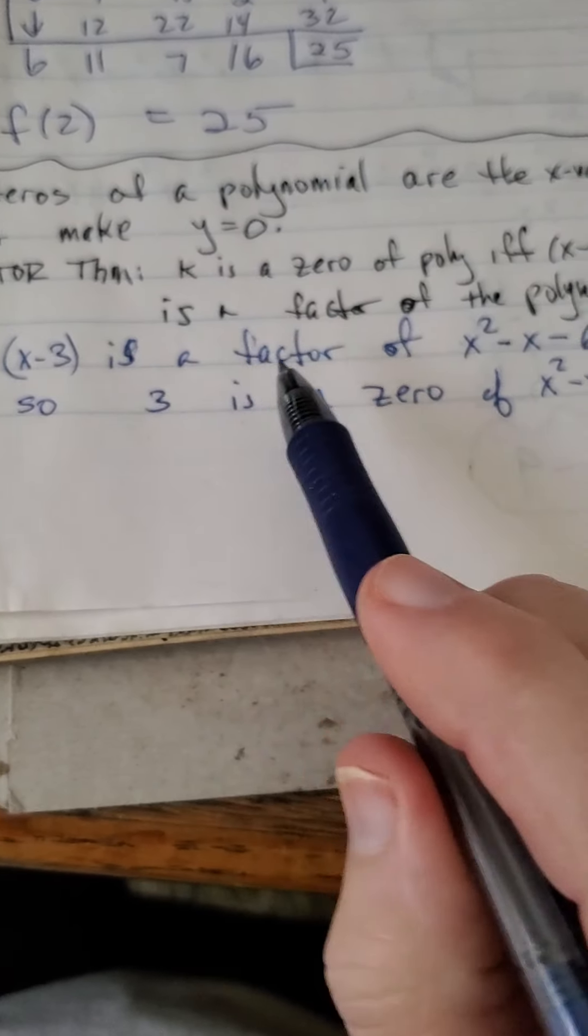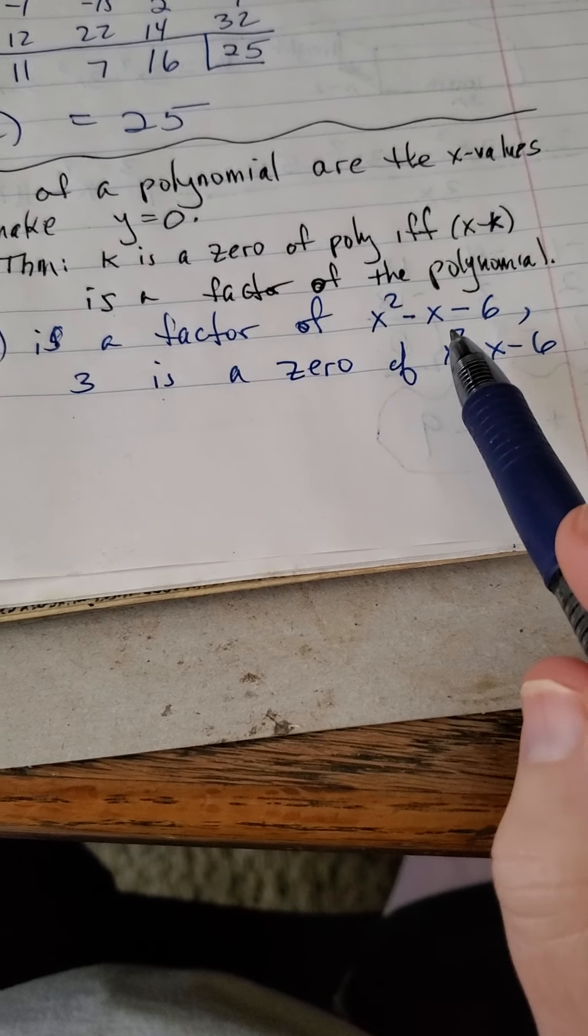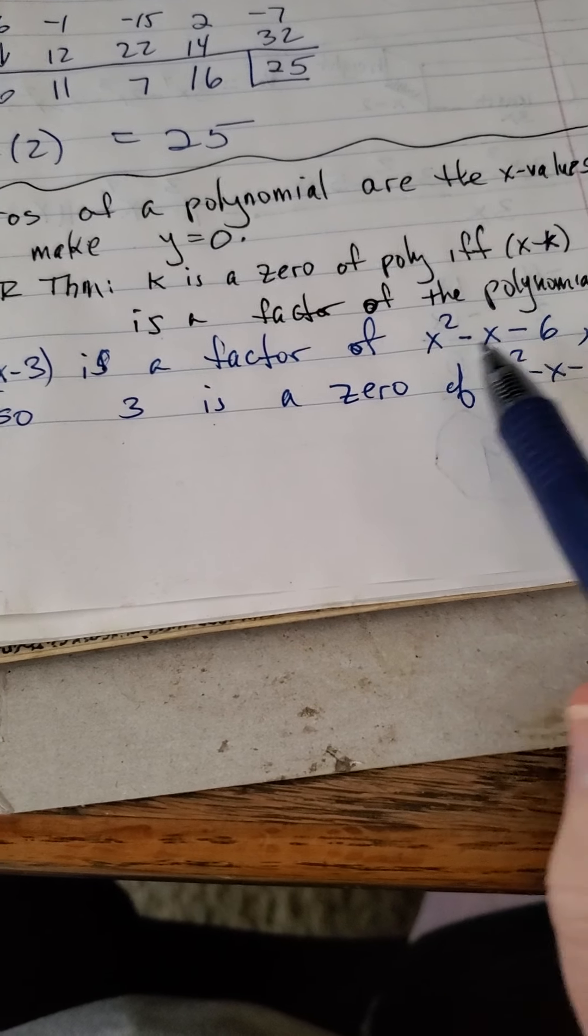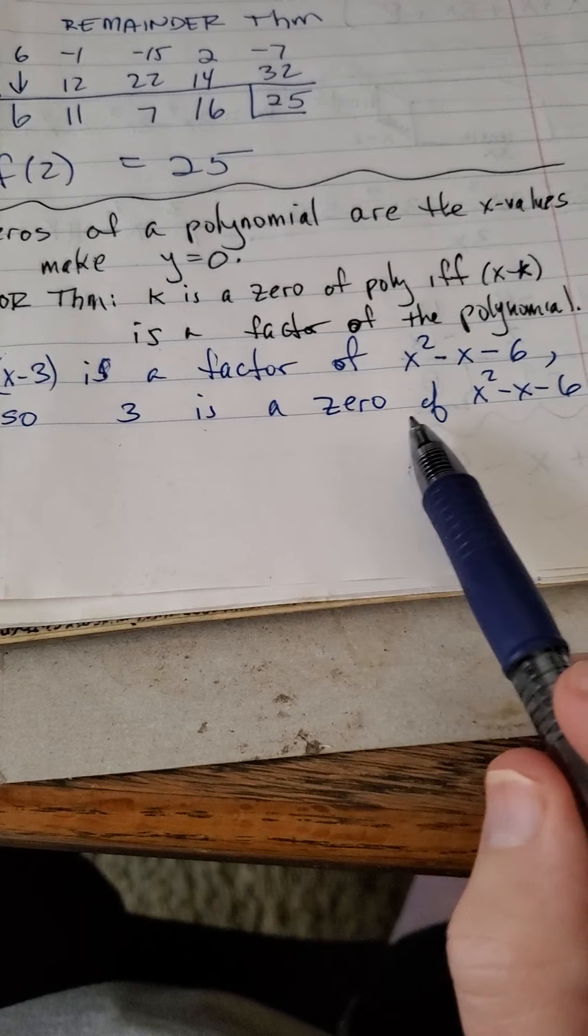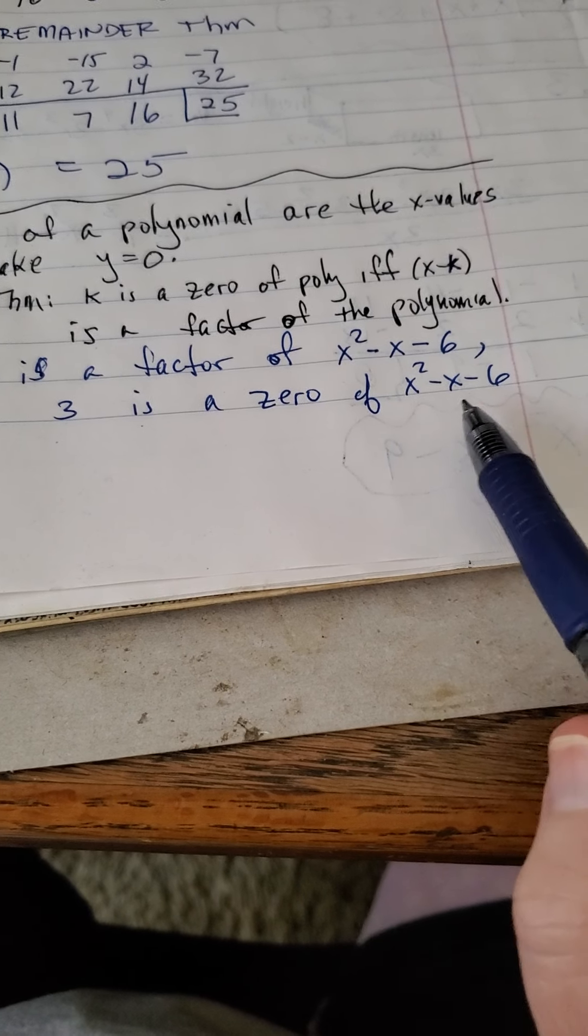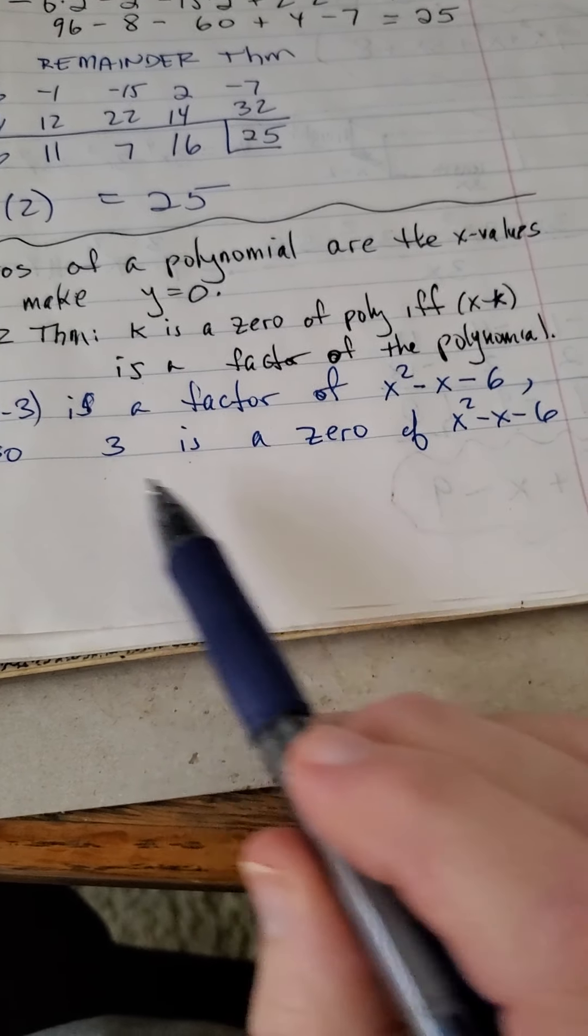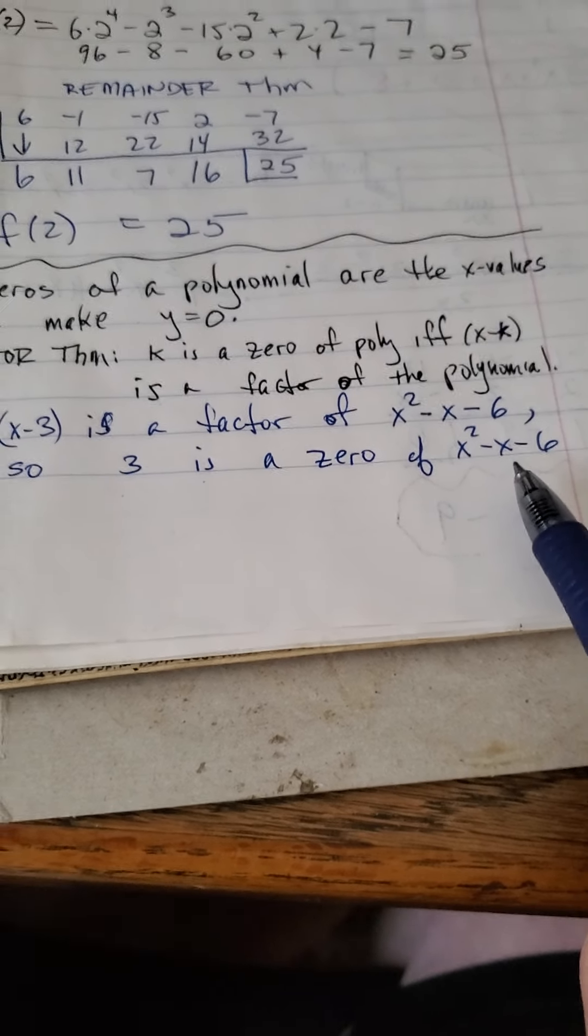For example, x minus 3 is a factor of x squared minus x minus 6. And if you don't believe me, factor it out. So that means that 3 is a 0 of x squared minus x minus 6. It also means that negative 2 is a 0 of the same polynomial.